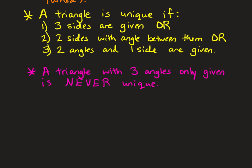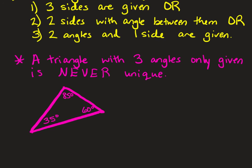And then if you have a triangle with three angles only given, then it is never unique. Now we could demonstrate this, that if we have a triangle with three angles, that it's not unique, because look at this triangle that I've drawn here. It has the three angles 85, 35, and 60.